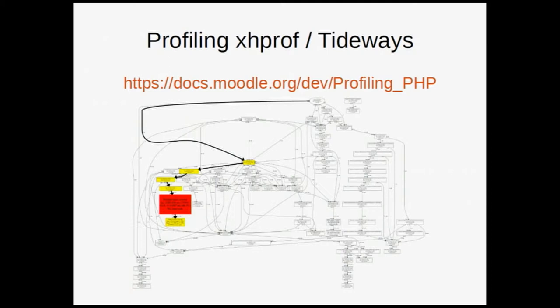I'll briefly mention a couple of things that we fixed. One was a Mustache template inside a loop. One was a capability check that was a little bit slow. One was optimising the way we actually queued up emails. We tested sendmail versus Postfix in a couple of different settings. Where we could have upstreamed them we did, but it's more about the process of going through and chipping them off.